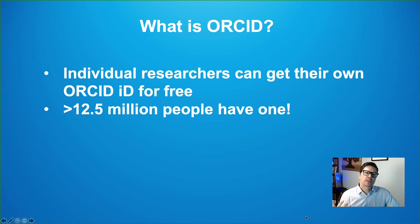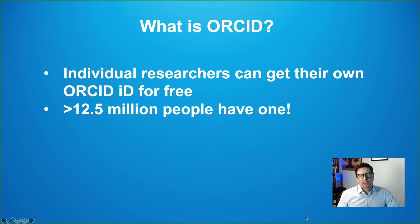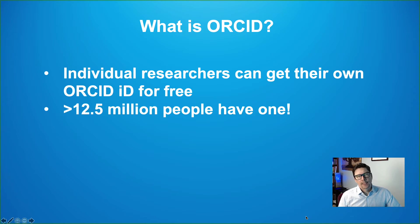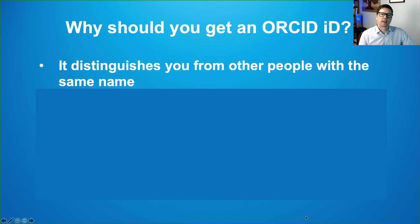Individual researchers can get their own ORCID ID for free. Right now more than 12.5 million people already have an ORCID ID — I have one. If you don't, I'm going to tell you why you probably should get one as soon as possible.